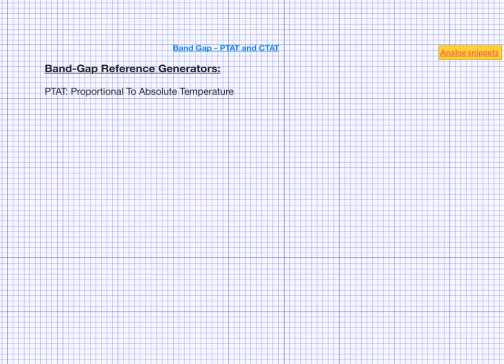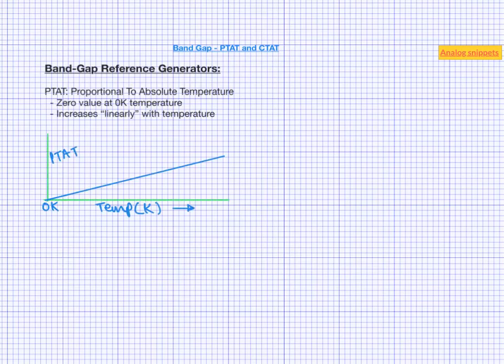That means it is zero at absolute zero temperature and then increases linearly with temperature. So if we plot a PTAT quantity with temperature, it will be a straight line with positive slope passing through the origin.